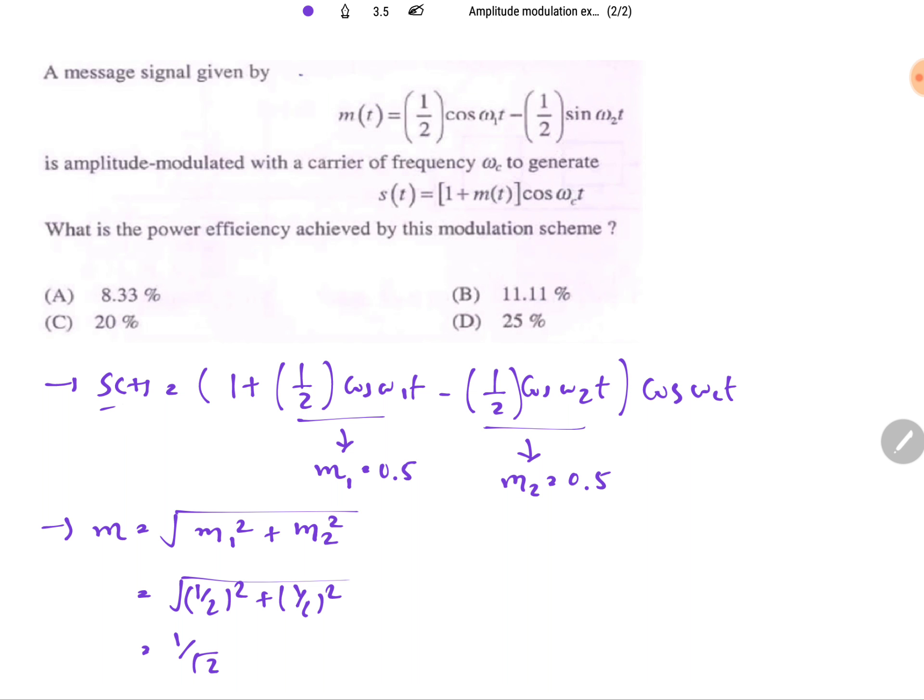From this signal we can identify carrier amplitude Ac equals 1. So carrier power Pc equals Ac square by 2, so that is half. Carrier power we can identify that is half.